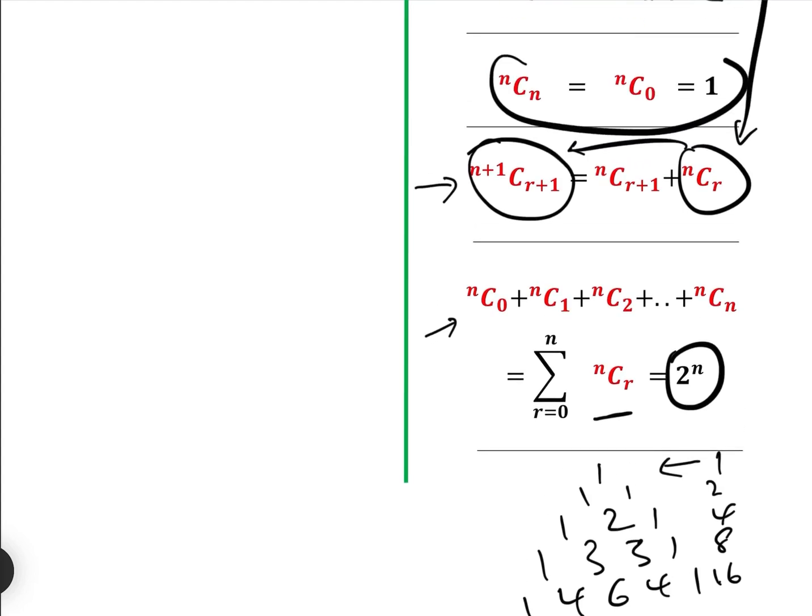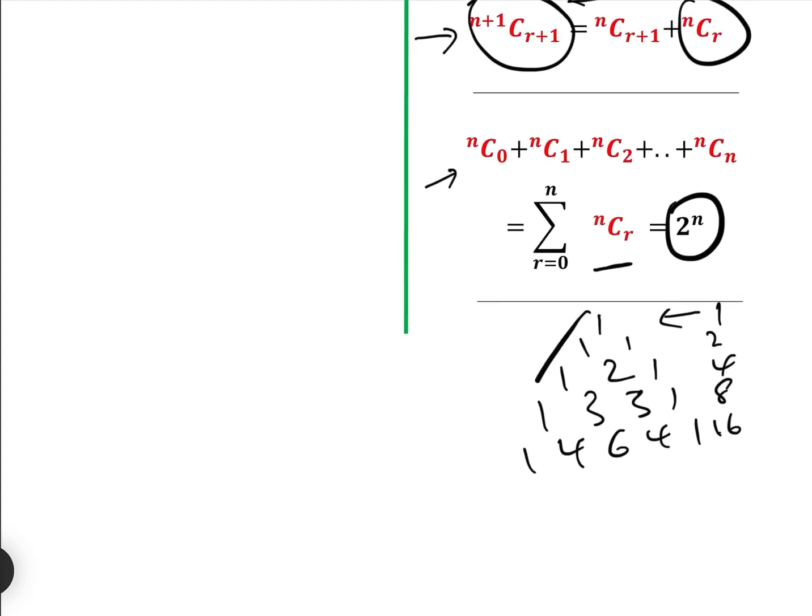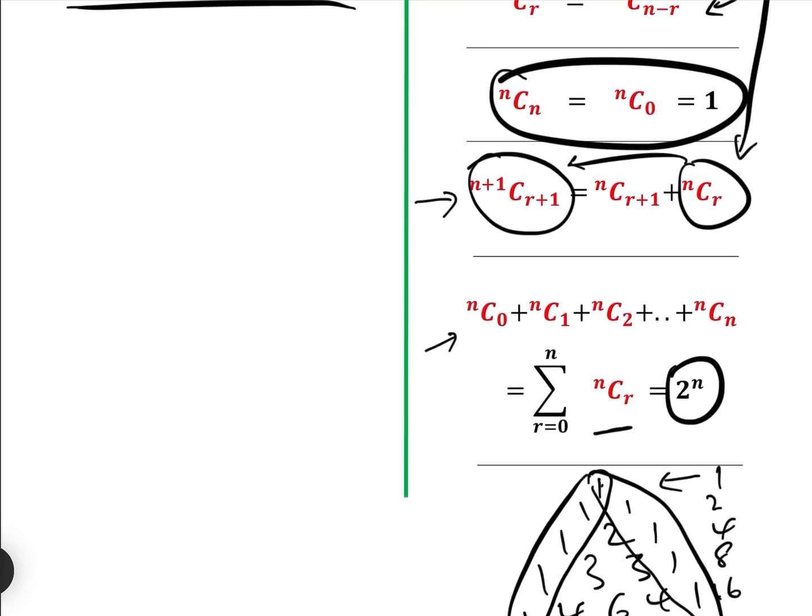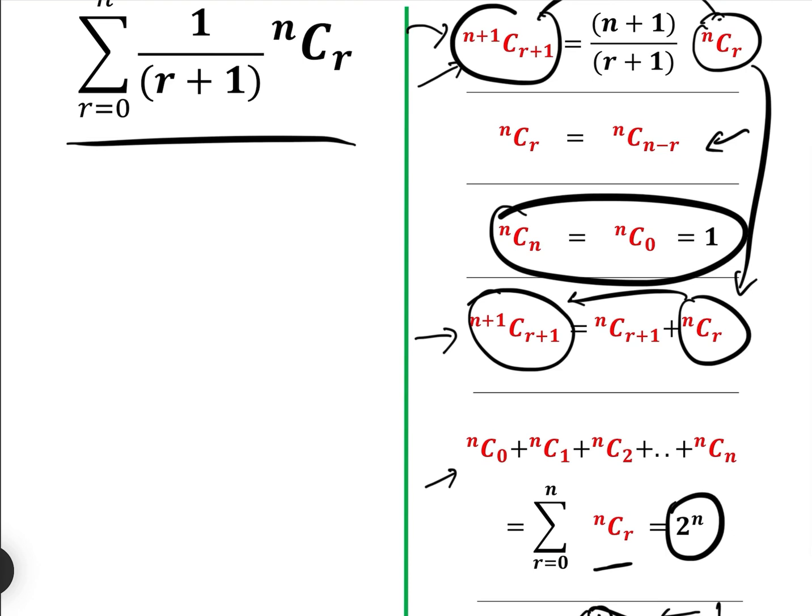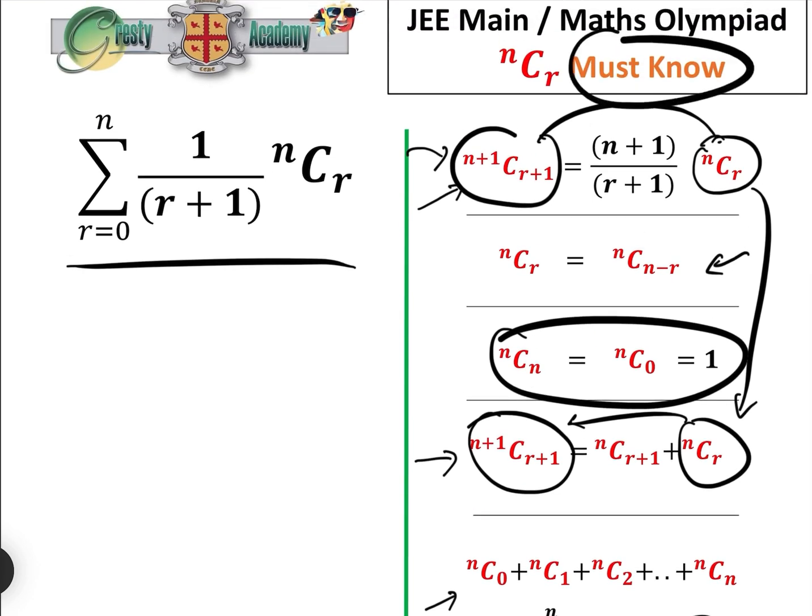And also, by the way, that's where this one comes from. Because obviously nC 0 and nC n are always 1. Anyway, so if you know these five absolute, and I put must know, you must know them. If you know them, this is actually extremely simple.